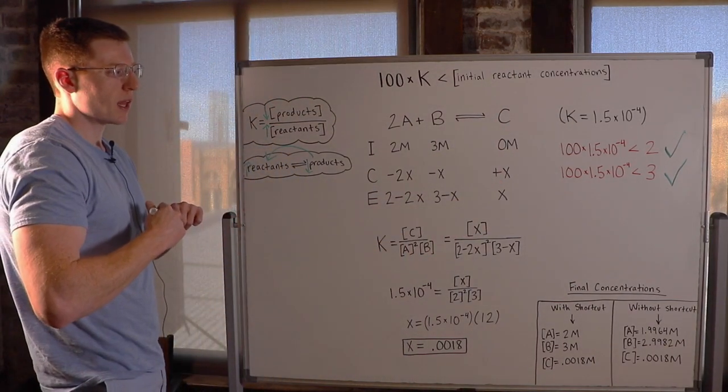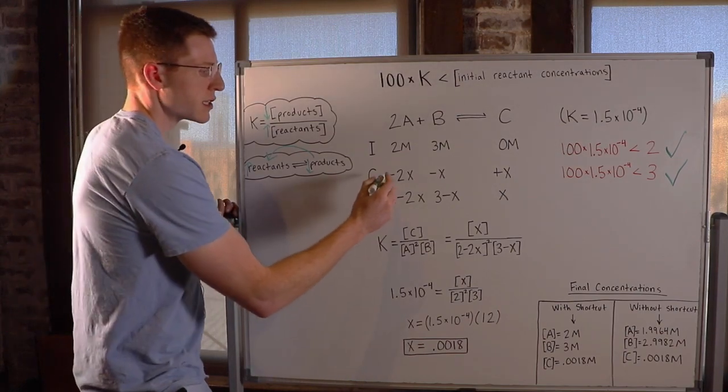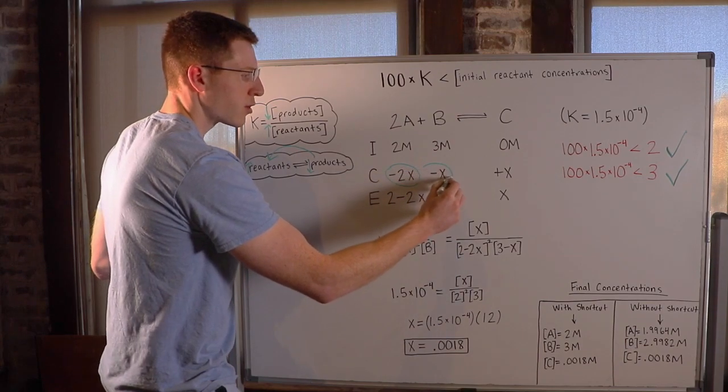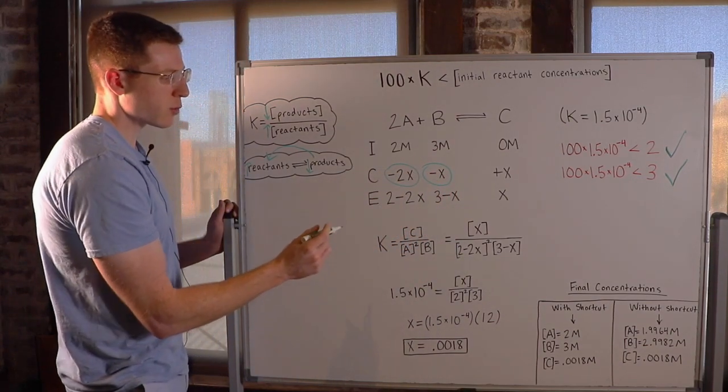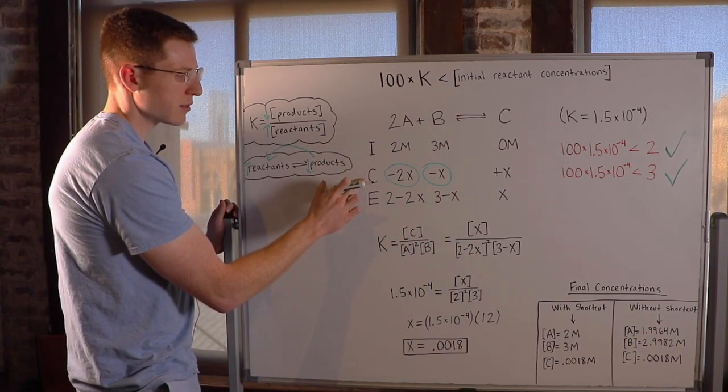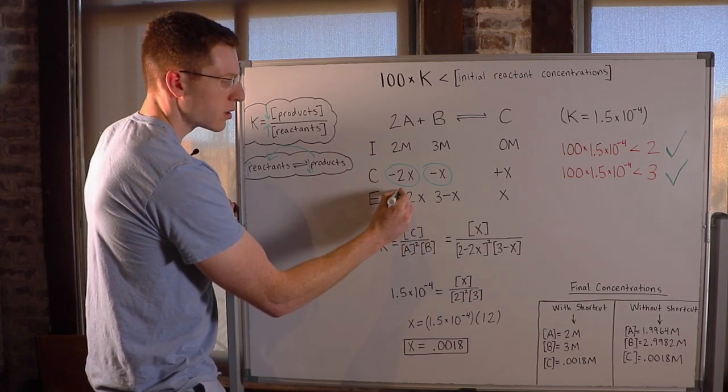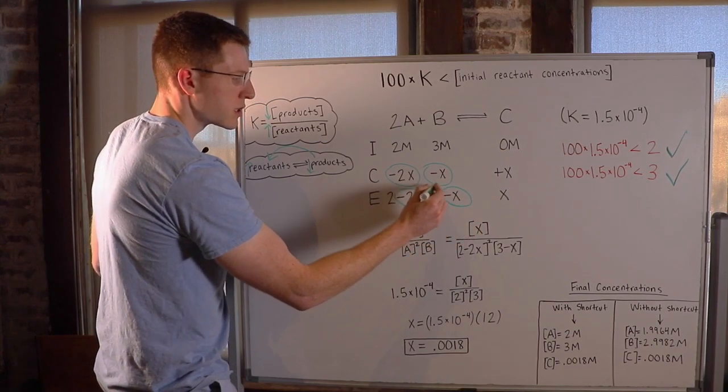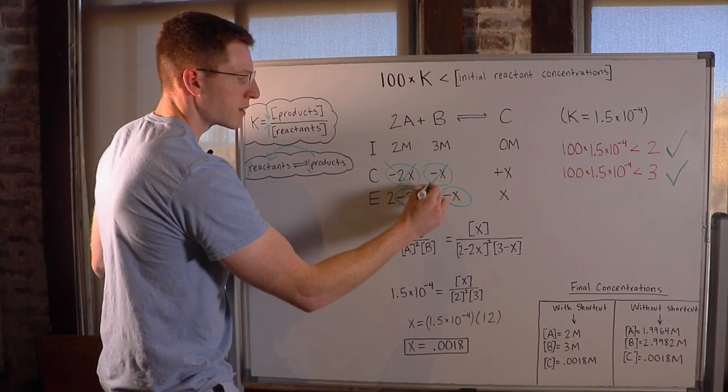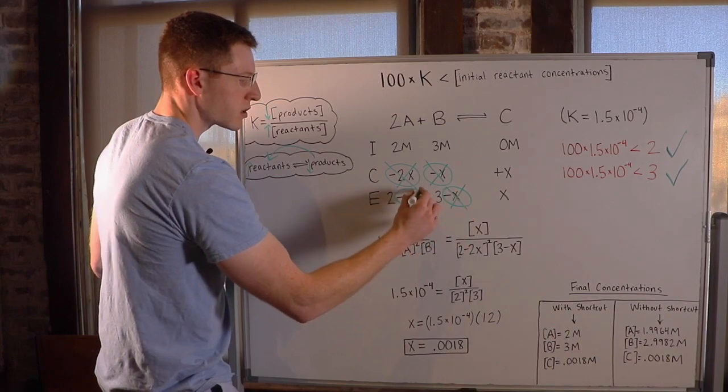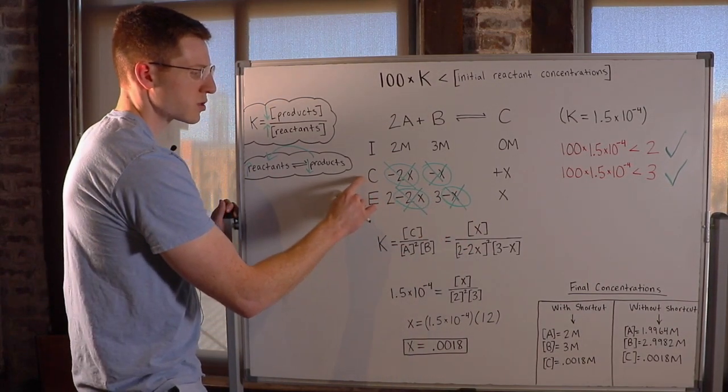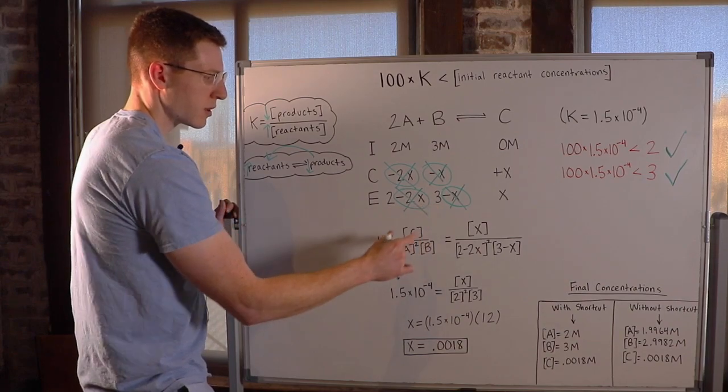So when the shortcut rule applies, what it means is that we can actually ignore the C row for our reactants. In other words, when we add our I row and our C row together to get our equilibrium row, we can ignore these minus X's. So I can just completely forget about these. So you may start out this problem using the minus X's, the change row for the reactants, and it would look like this.